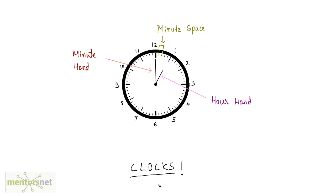A clock basically has two hands. One is the longer hand and another is the shorter hand. The shorter hand is also called the hour hand and the longer hand is also called the minute hand. The circumference of a clock is divided into 60 parts and each part is known as a minute space.